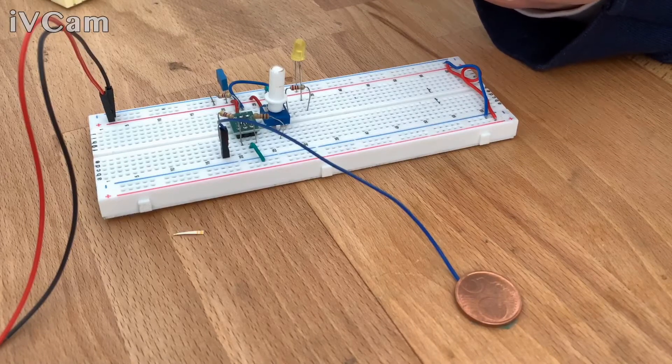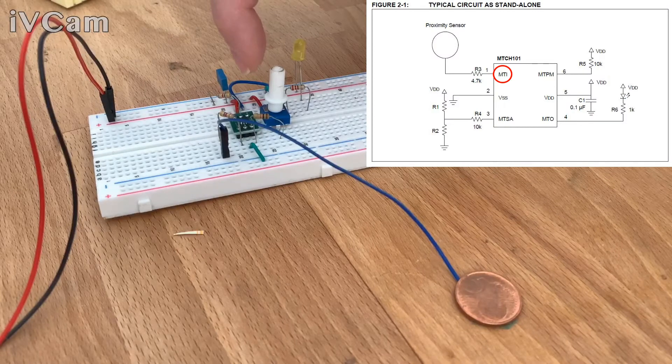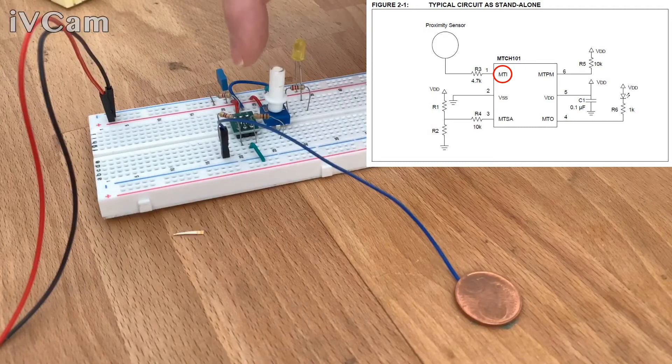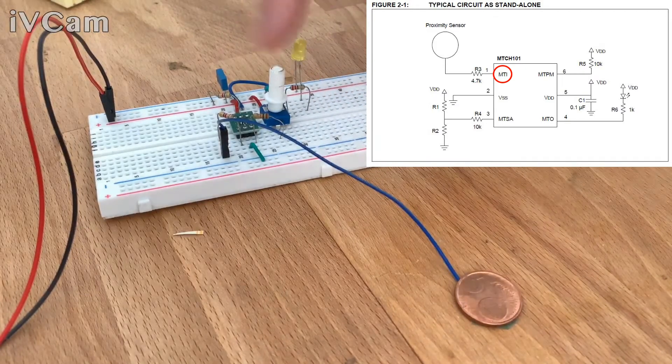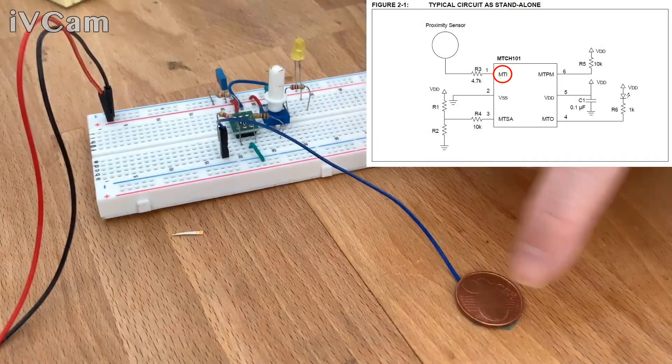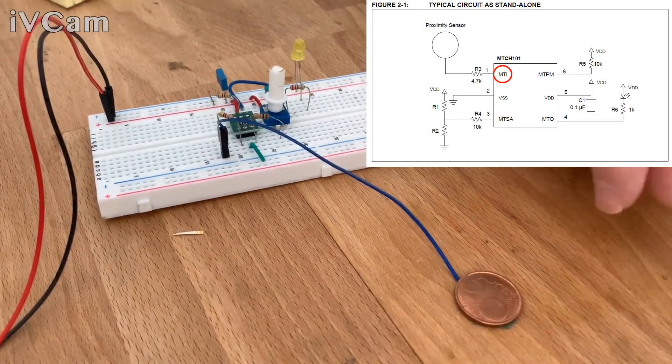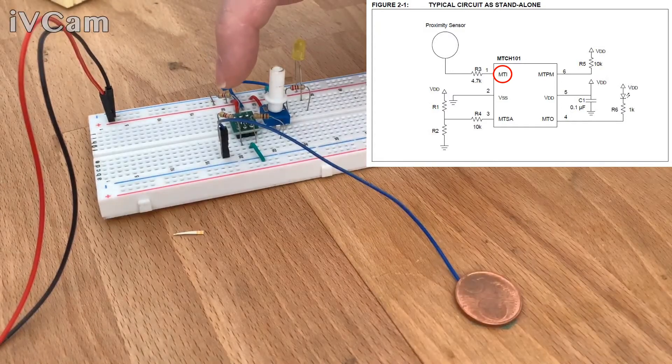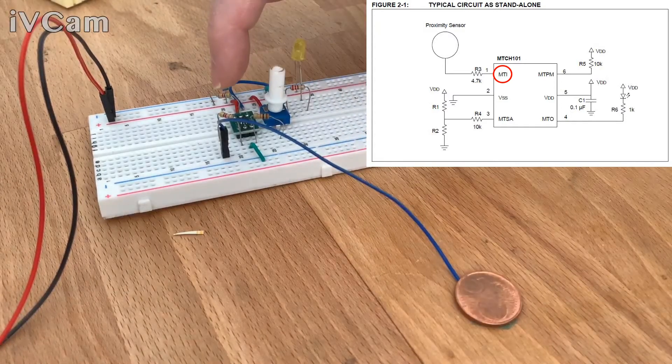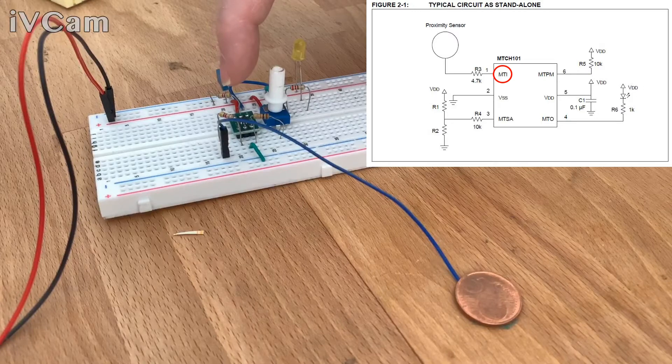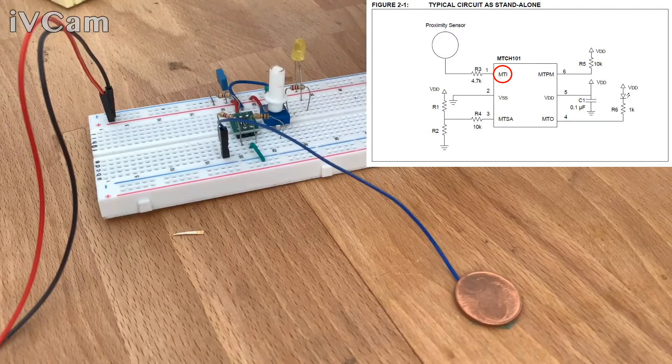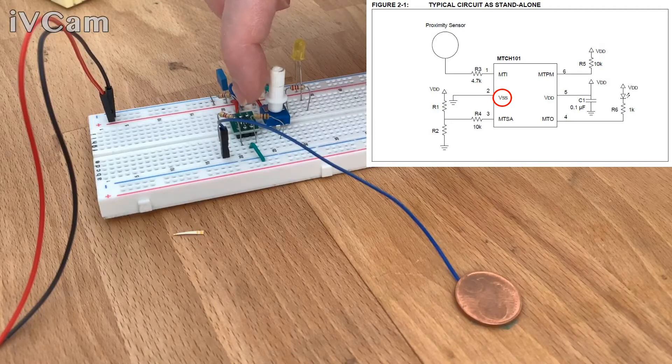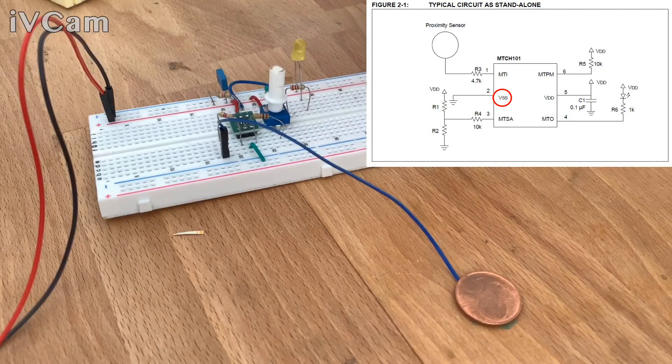Starting from the first line of the IC, which is this one, which is called MTI. We have the input, so we have a wire connected to a coin through a piece of tape. Again, something very rough. The wire is connected through a resistor which is 4.7 kilo ohm. Then we have the second pad here, which is VSS, so it's the negative.